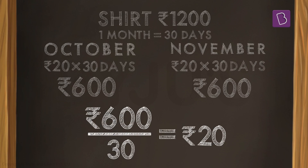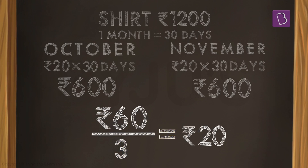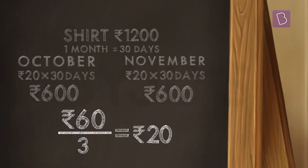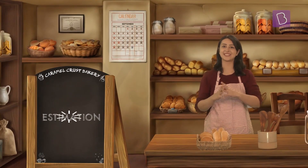Now how did I do this? I first divide 600 by 30. In the next step we cancel out the zeros in the numerator and denominator, and we then arrive at this answer: 60 divided by 3 equals 20. This process of dividing 600 rupees into 30 days gave me 20 rupees, which is the amount arrived at after using a process of estimation.